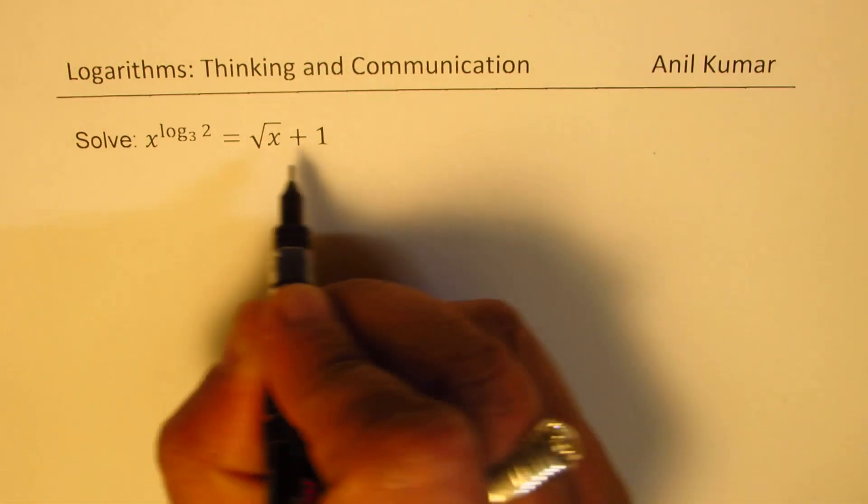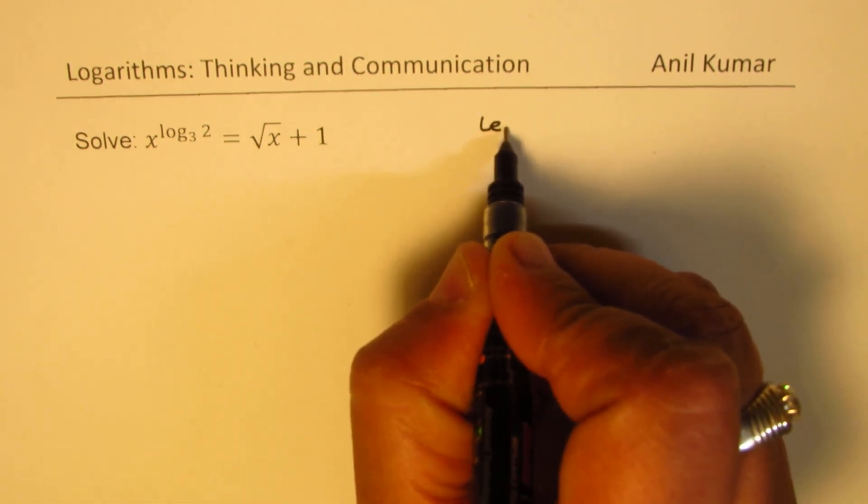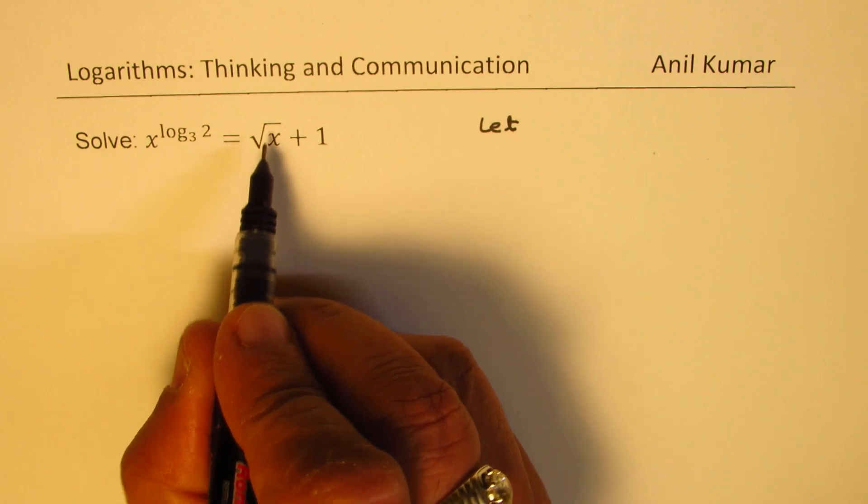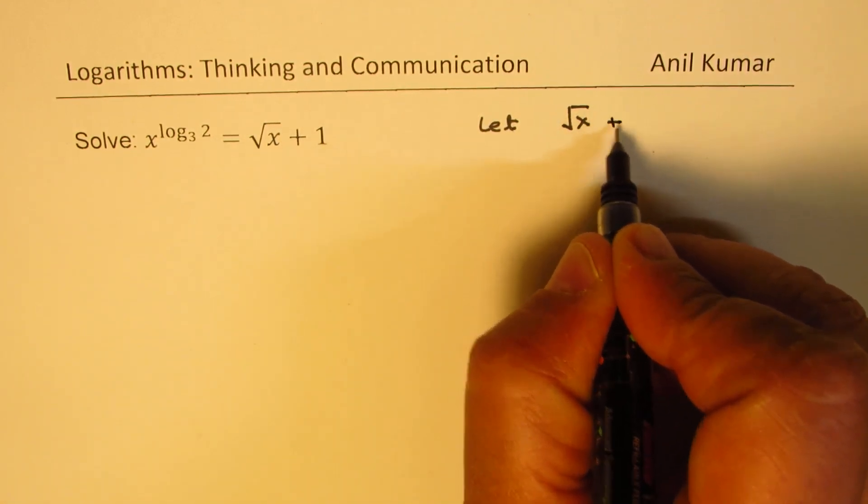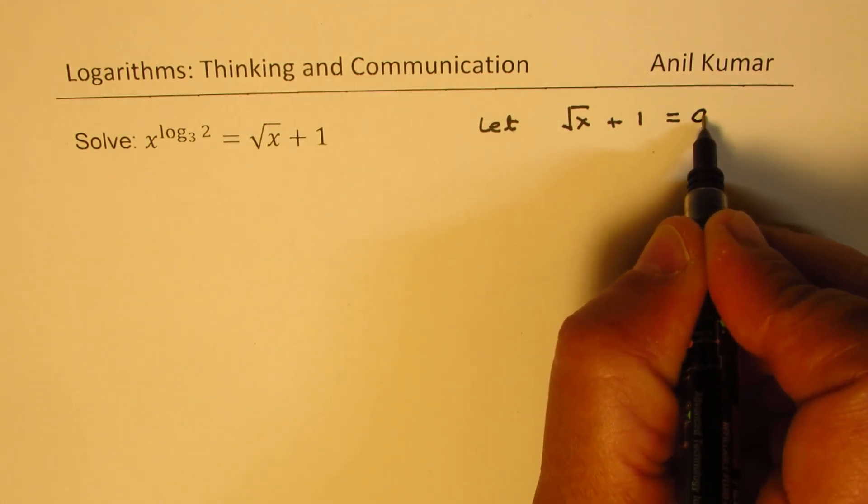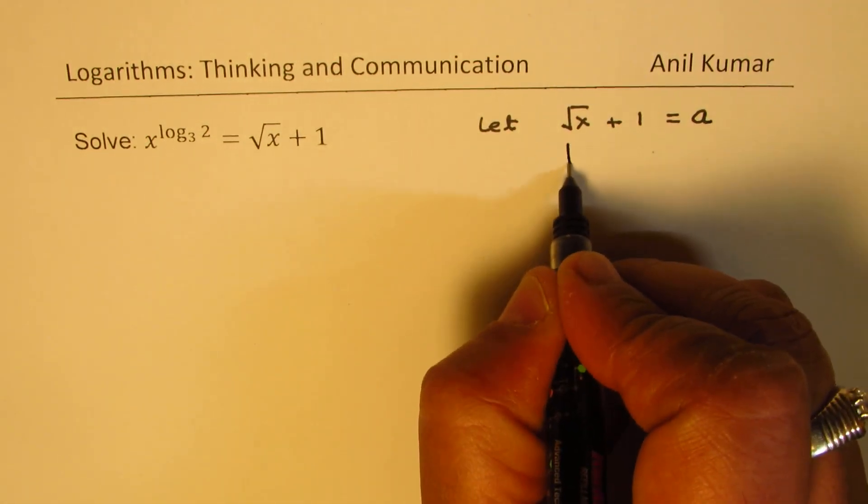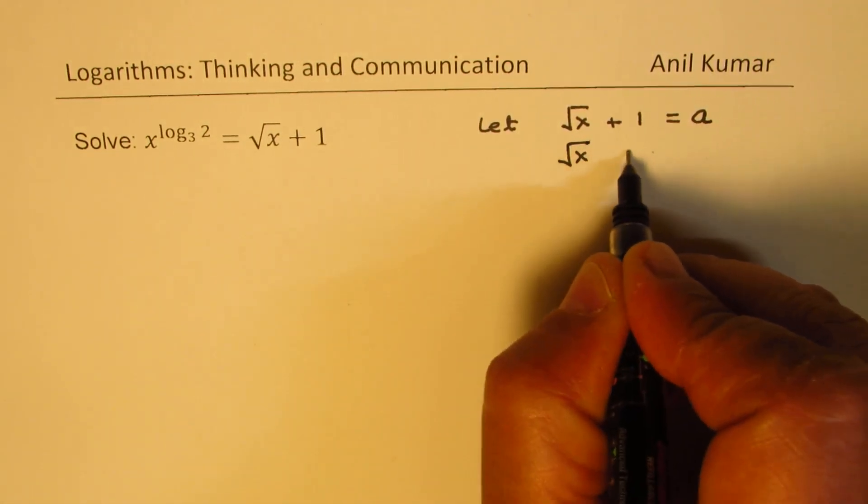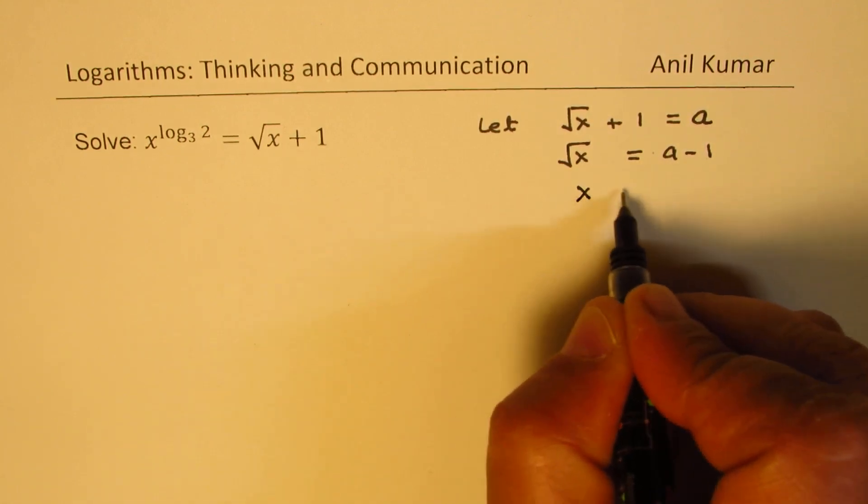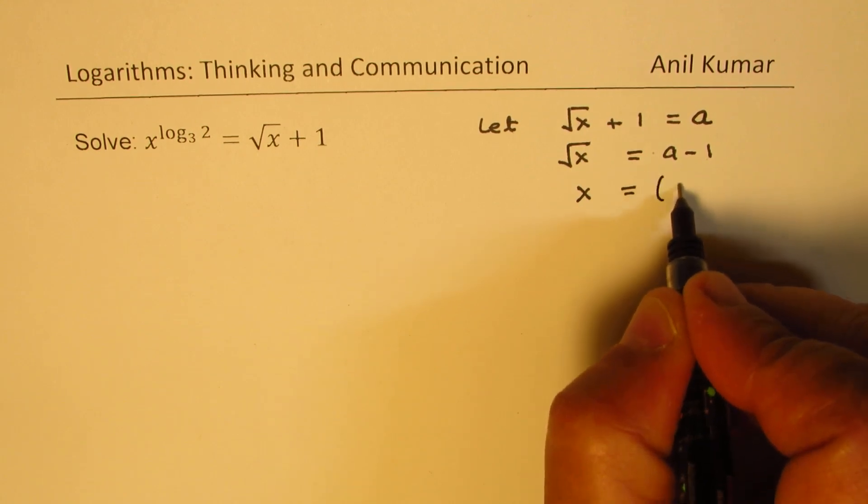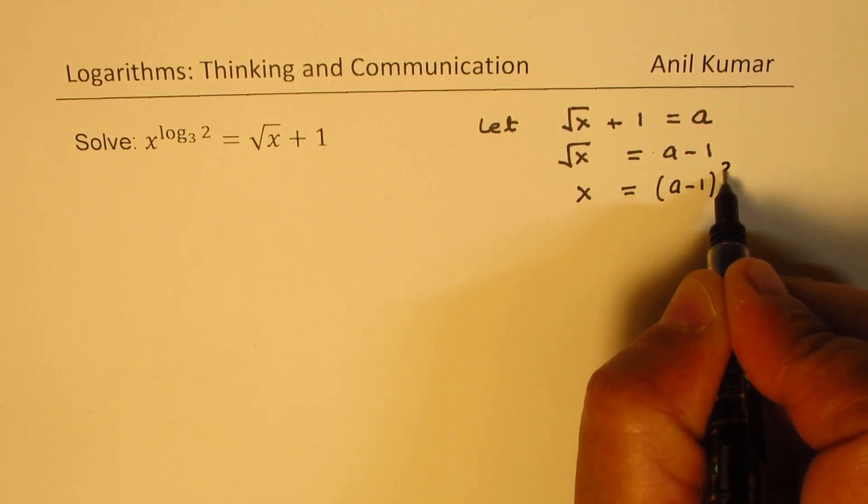We can let the right hand side, which is square root of x plus 1, be equal to a. In this case, square root of x will be equal to a minus 1. Squaring both sides we get x is equal to a minus 1 whole square.